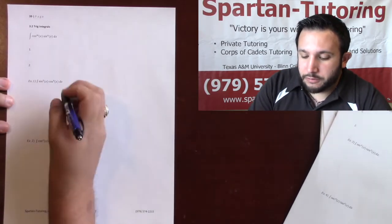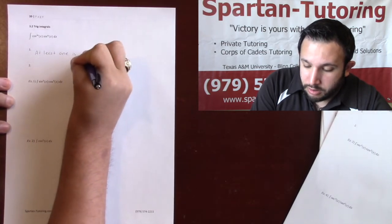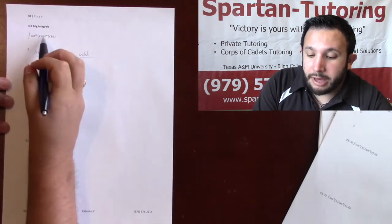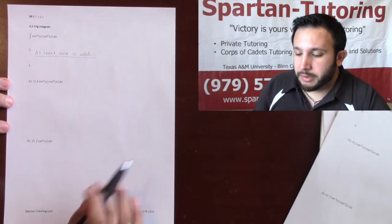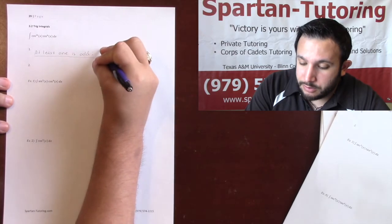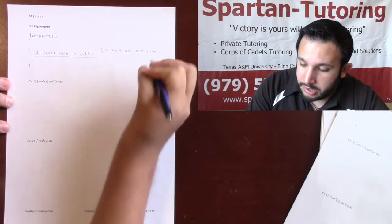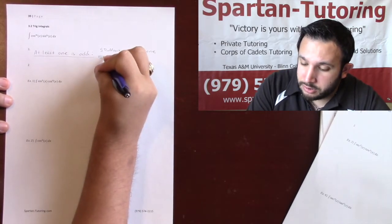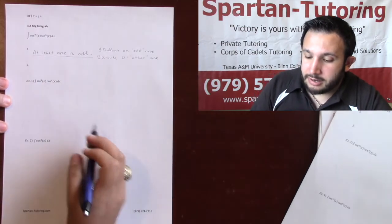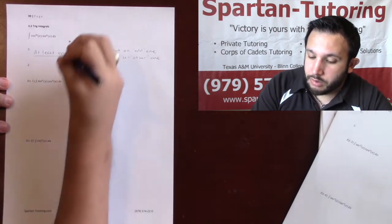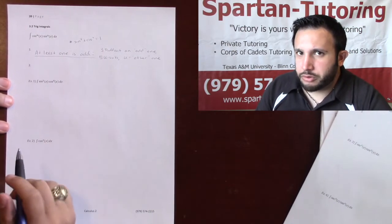You're going to have one of two possible scenarios. The first scenario is when at least one power is odd — for example, cosine cubed, sine to the fifth, something like that. If at least one of the powers is odd, this is a two-step process. Step one: pull out an odd one. Step two: do a u-sub and set u equal to the other one. The identity you need to remember is sine squared plus cosine squared equals one.